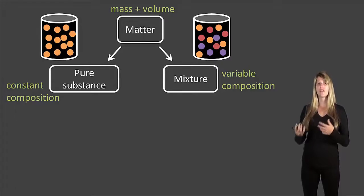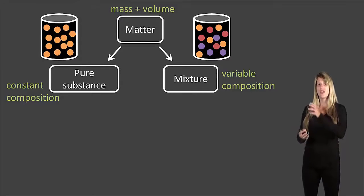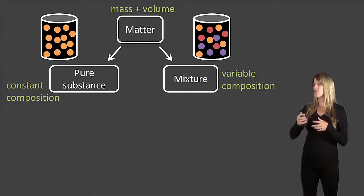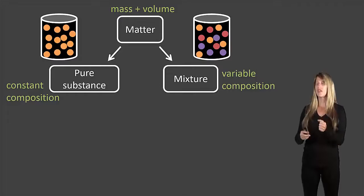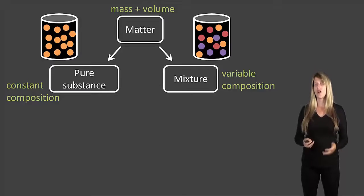For the mixture there's variable composition. If you took a sample in that second canister in various places sometimes you would get orange circles, sometimes red circles, sometimes purple circles. So it's made up of different things mixed together. It's not constant.